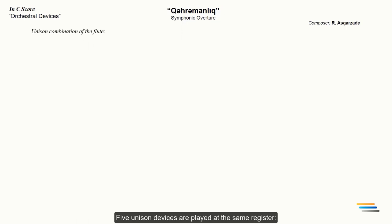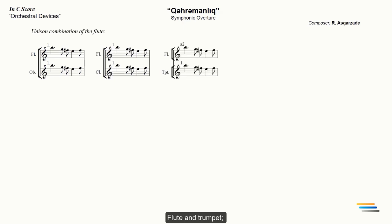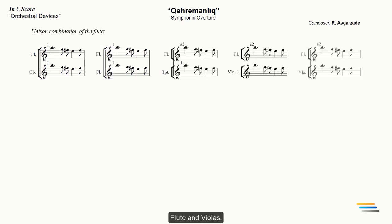Five unison devices are played at the same register: flute and oboe, flute and clarinet, flute and trumpet, flute and violins, flute and violas.